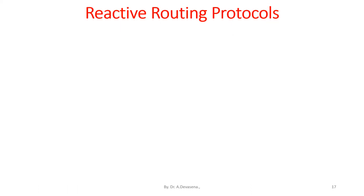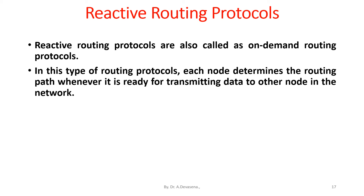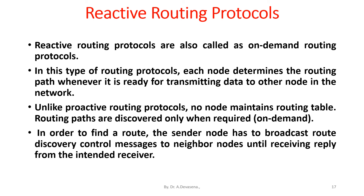Reactive routing protocols are also called on-demand routing protocols. In this type, each node determines the routing path only when it is ready to transmit data to another node. Unlike proactive routing protocols, no node maintains a routing table — routing paths are discovered only when required, that is, on-demand. In order to find a route, a sender node broadcasts route discovery control messages to neighbor nodes until receiving a reply from the intended receiver.